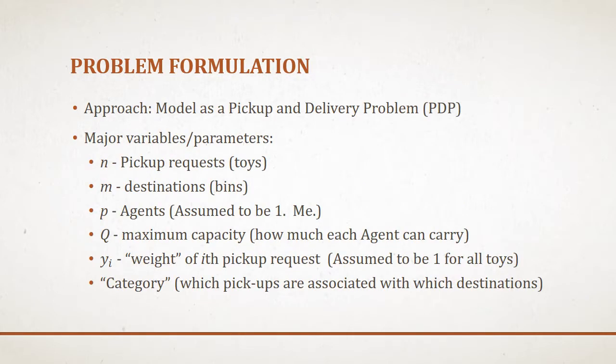Here's a list of parameters that I was working with. There's the number of toys, the number of toy bins that you have, the number of agents — for this problem, I assumed it to be one — the maximum carrying capacity of an agent, the weight of each toy, which I also assumed to be one for each toy, and then there was something called the category of the toy. What I mean by this is you can't just put any old toy in any old bin — you'll never be able to find it again if you do. Every toy has its place where it belongs: a book belongs on a bookshelf, dress-up clothes belong in a trunk, and likewise.